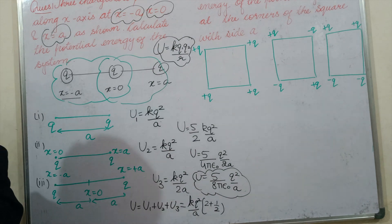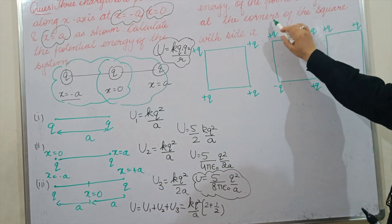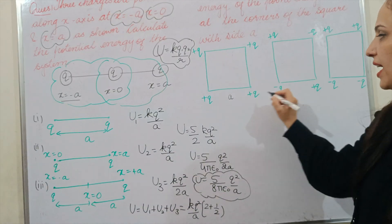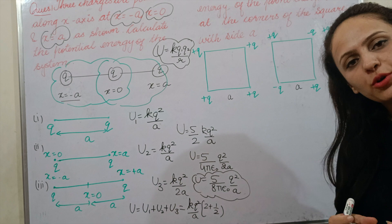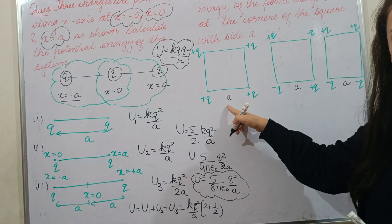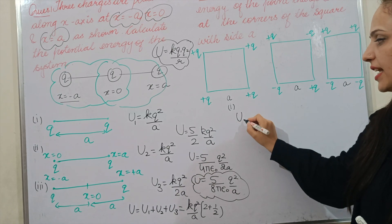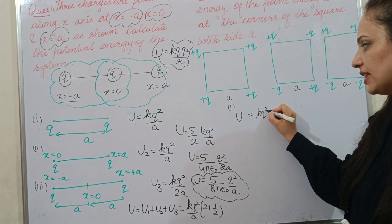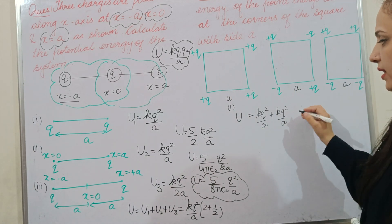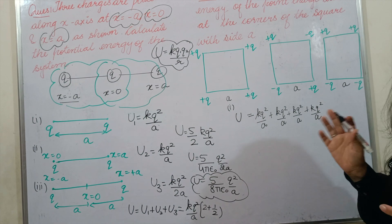The next question: determine the interaction energy of point charges located at the corners of a square with side A, for three cases. In the first case, we have four identical positive charges at all four vertices. We calculate four side interactions, each equal to kq²/A, giving 4kq²/A.